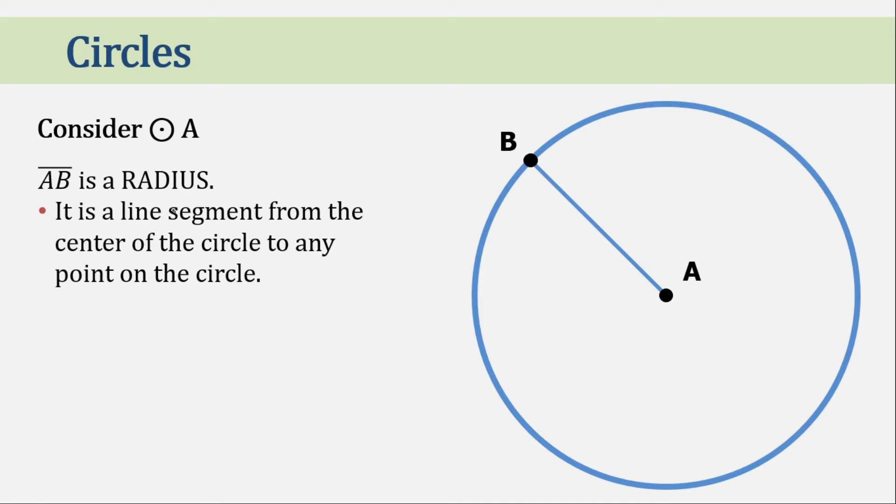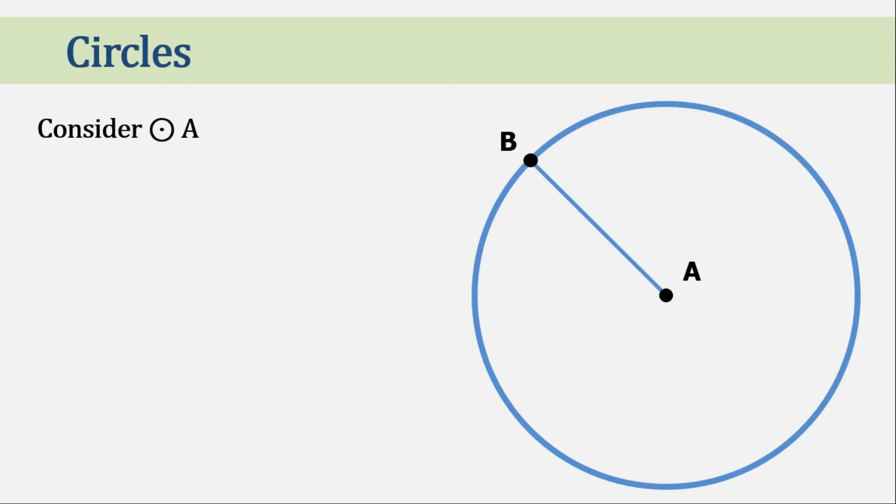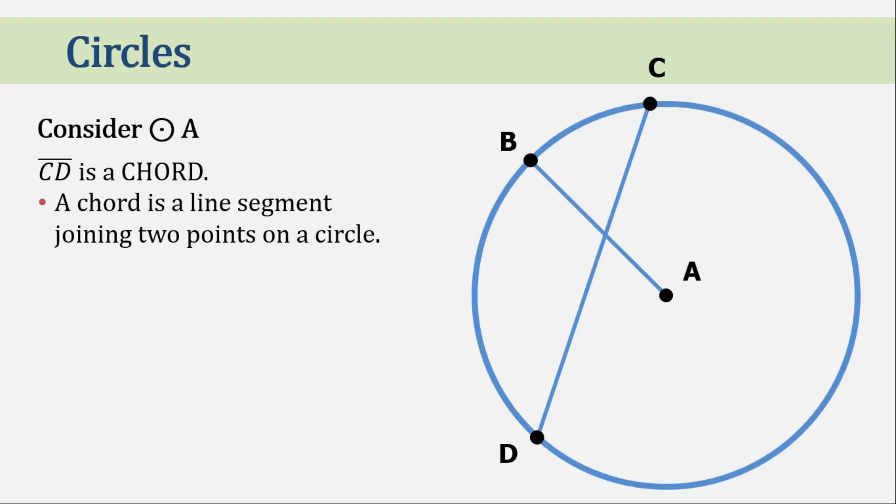Let's pop up two other points and connect them to create a line segment. Let's name this line segment CD. Now CD is a chord. A chord is a line segment joining two points on the circle. As long as the endpoints of these segments are points on the circle, then it is considered as a chord.